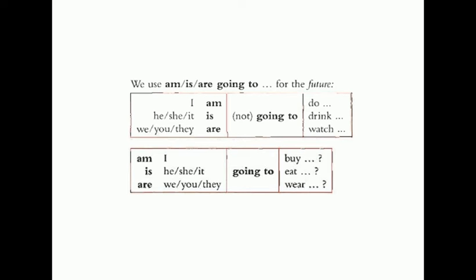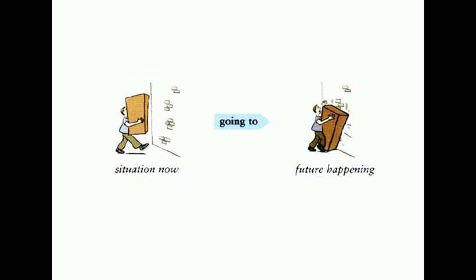We use am, is, or are going to for the future. We say: I am going to plus verb in the infinitive, or I am not going to plus verb in the infinitive. For questions, we make the inversion: am I, is he/she/it, or are you/we/they.